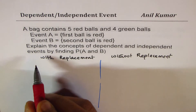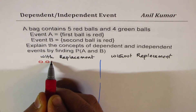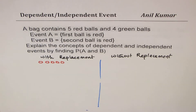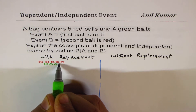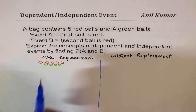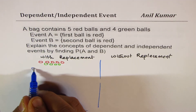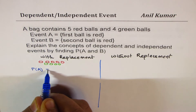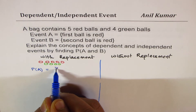We start with five red balls and four green balls. The probability of selecting the first red ball — that is, probability of A — is five out of nine.